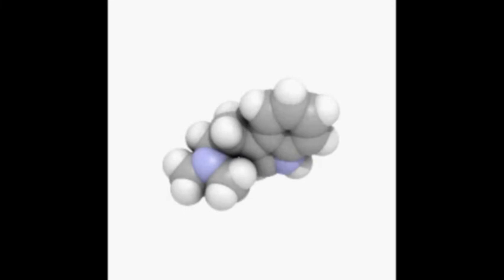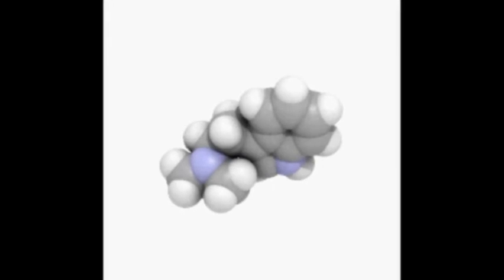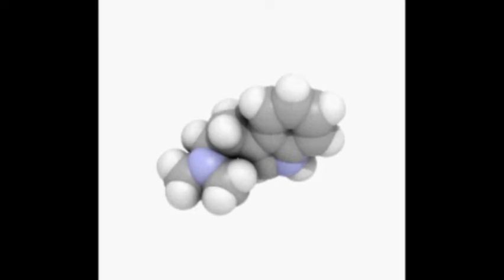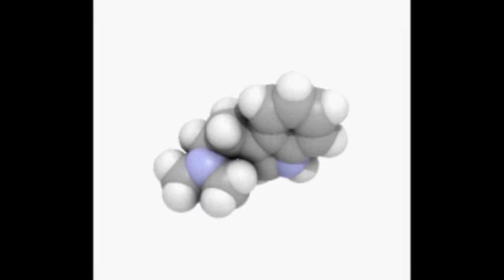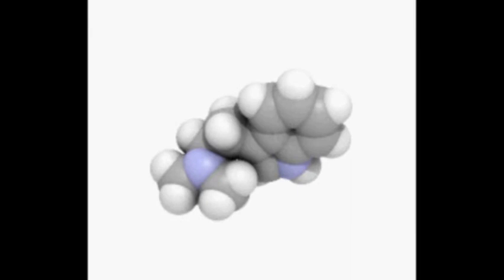Isogamy is a form of sexual reproduction that involves gametes of similar morphology - similar shape and size - differing in general only in allele expression in one or more mating type regions. Because both gametes look alike, they cannot be classified as male or female. Instead, organisms undergoing isogamy are said to have different mating types, most commonly noted as plus and minus strains.